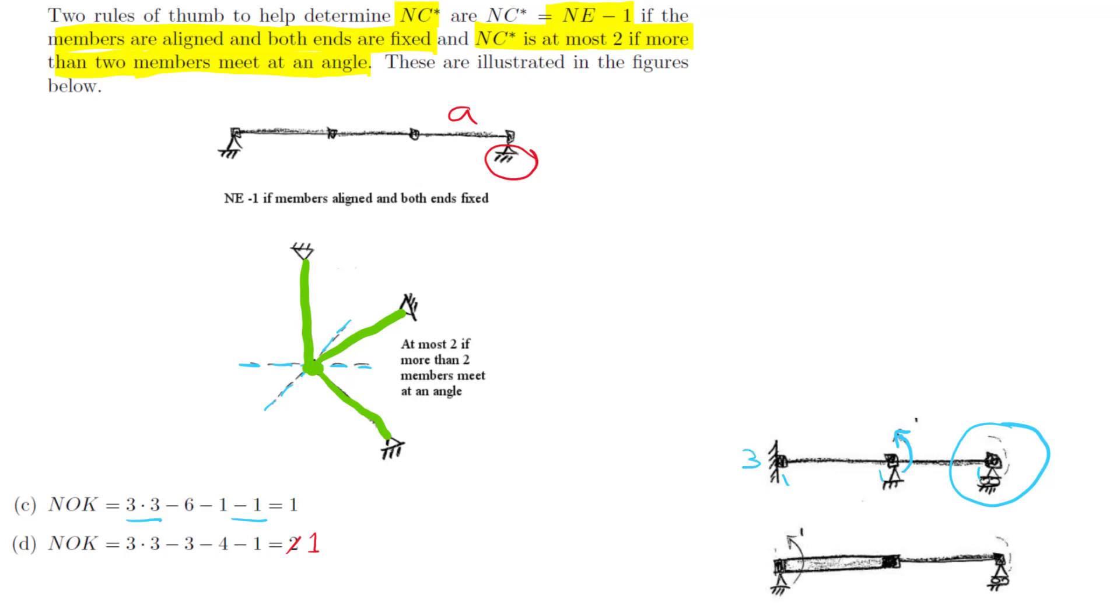We have three supports, two supports, and one support. That's six restraints. One axial constraint. We count this one. We don't count this one as we already discussed. And this gives us a value of one.